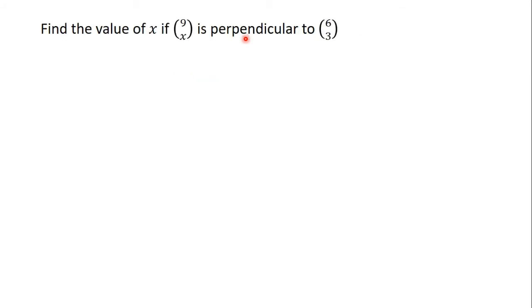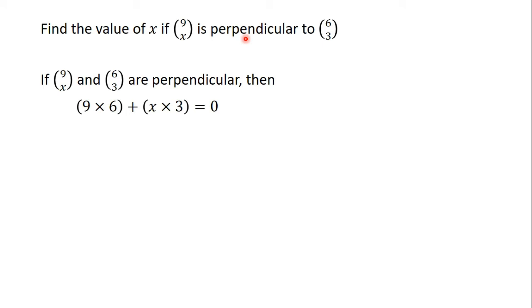Let's take the other question. Find the value of x if (9, x) is perpendicular to (6, 3). The question says that these two vectors are perpendicular. We know that if two vectors are perpendicular, then if you multiply 9 by 6 and add it to x times 3, we should get 0. Multiply the x component by the x component and add it to the y component by the y component — you should get 0.